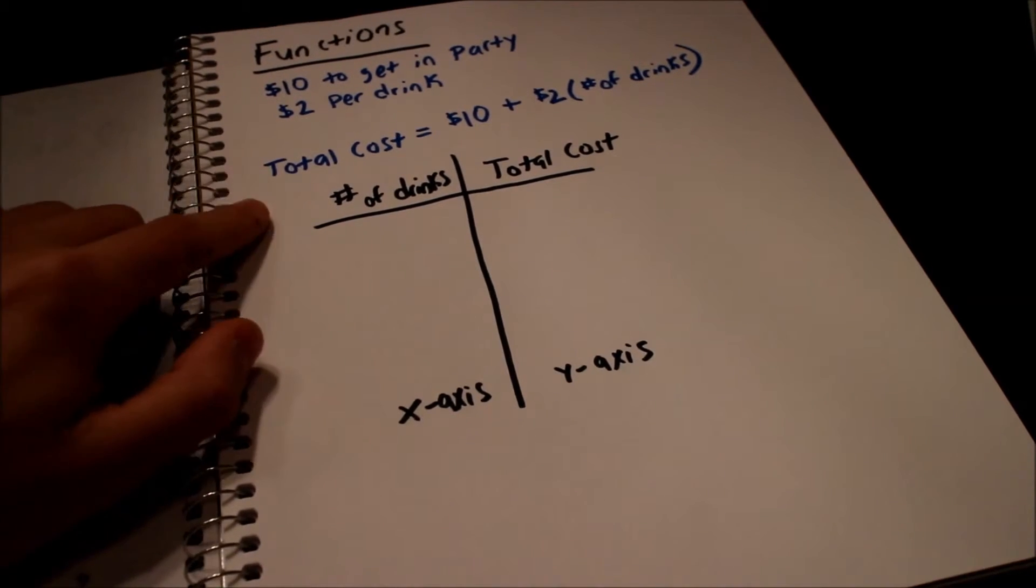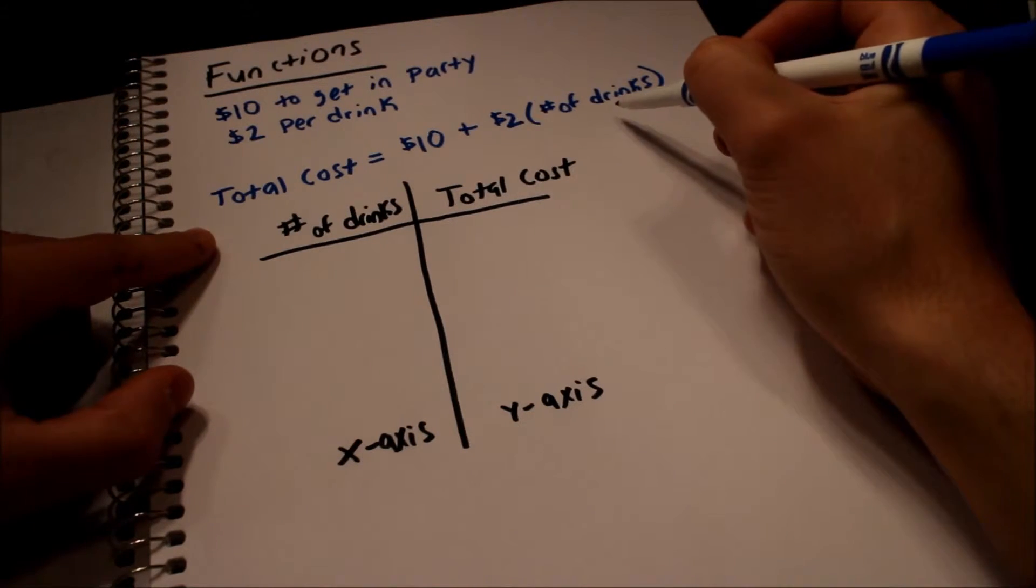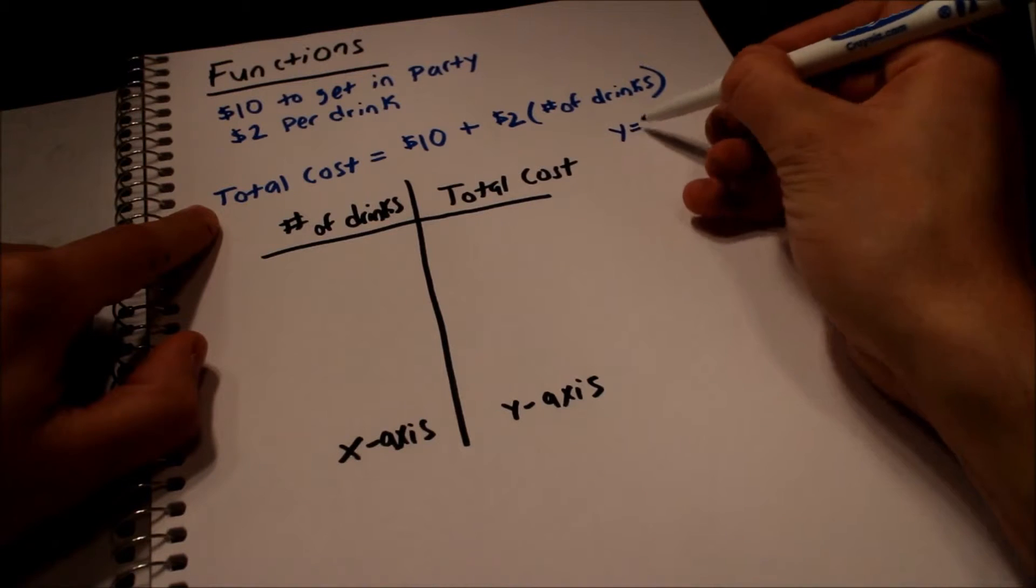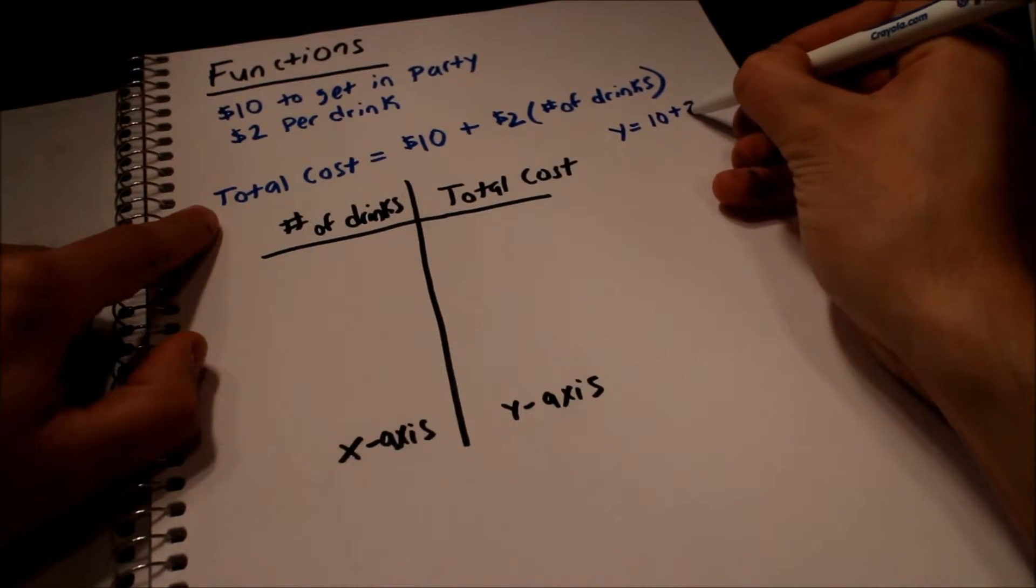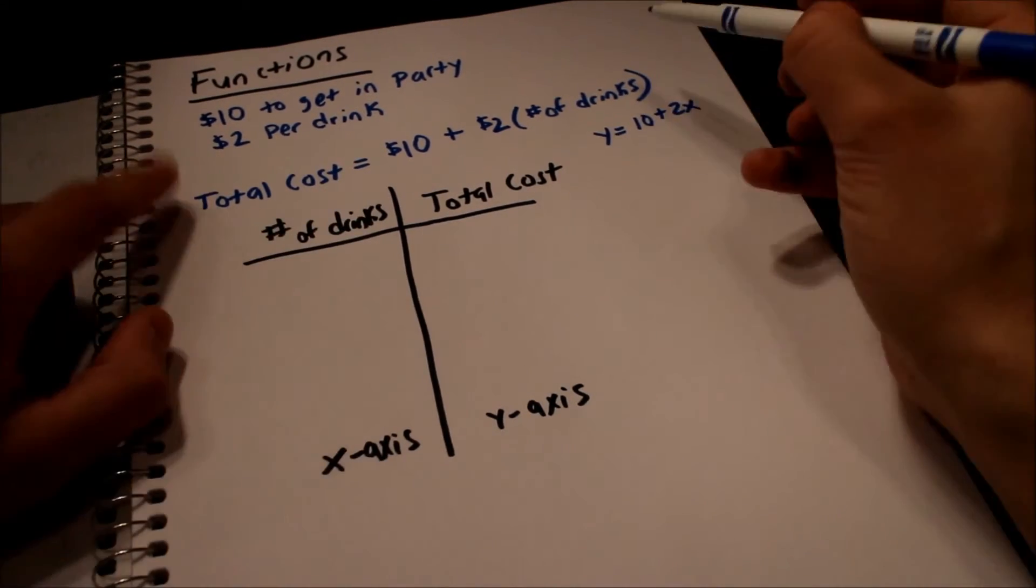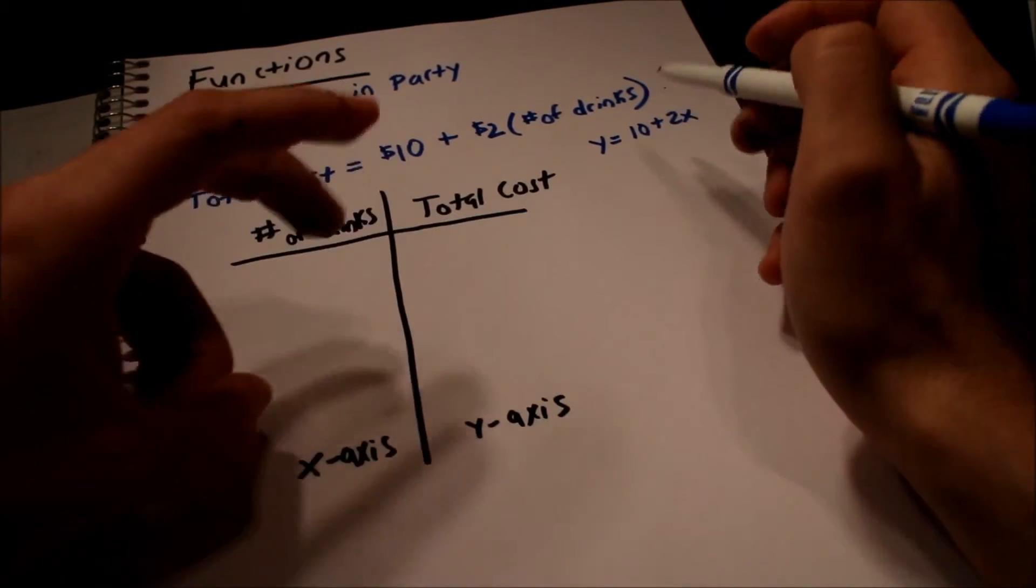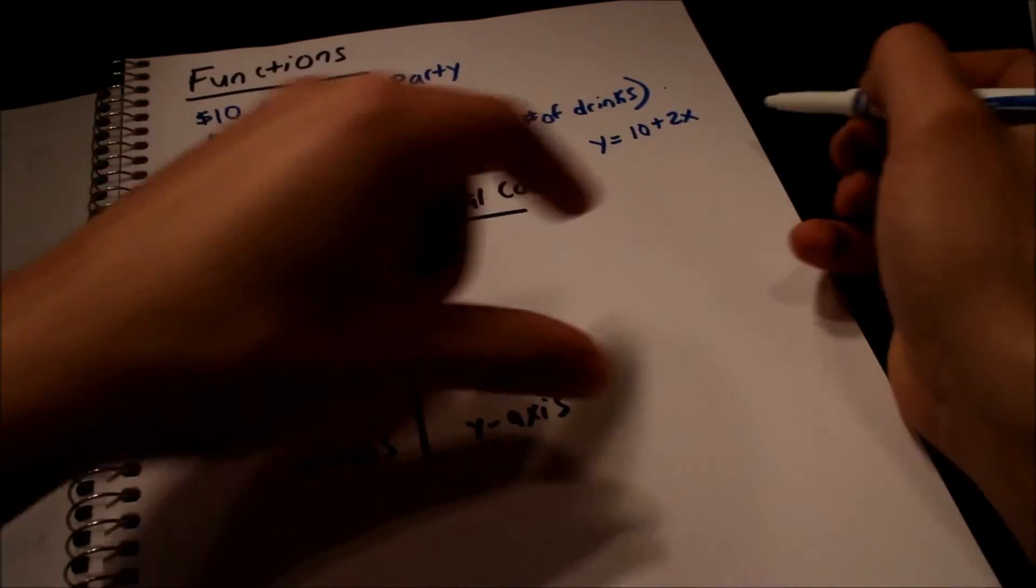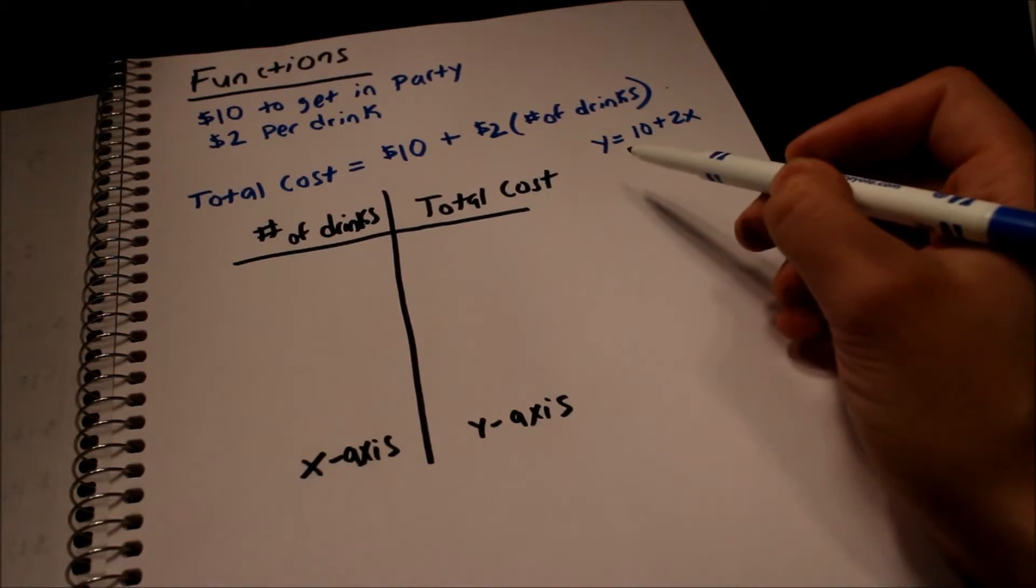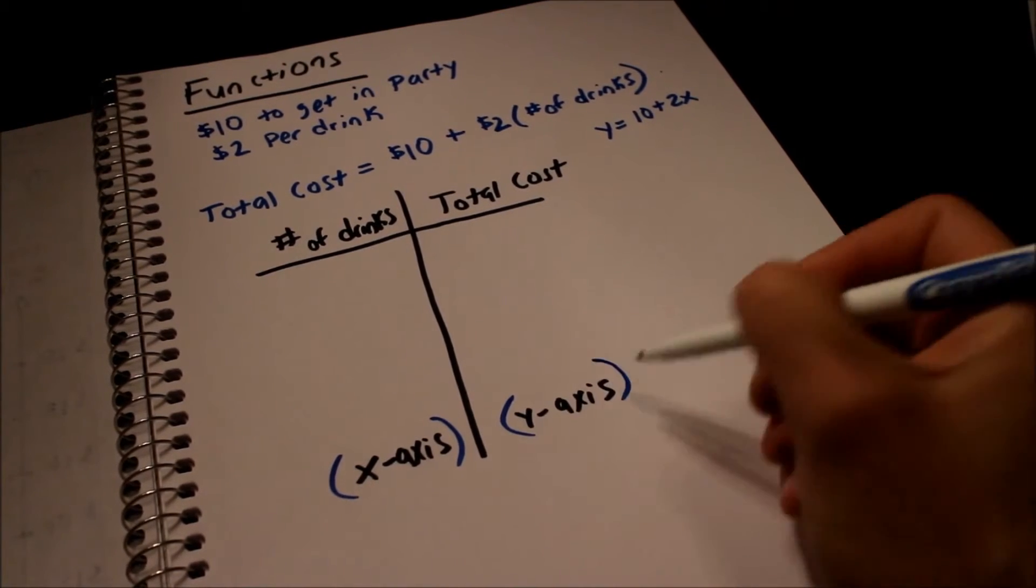So another way that we could have written this: you could have said, okay, total cost equals ten dollars plus two bucks times the number of drinks. Well remember, total cost we said is like the y-axis. So you could have said y equals ten dollars plus two x, because y is the output and x is the input. They're just letters to make it easier. Because in real life this is what's going on up here. This letter business is just to make this simpler. Y is always designated as the output, what you're going to get as your result. The x is always going to be your input, what you put in.